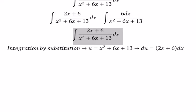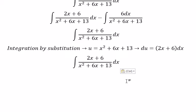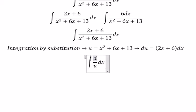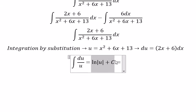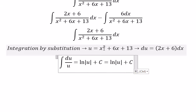So this one will change for u. This one, we change for du. And we got ln of absolute value of u. For u, we need to change back for this one.